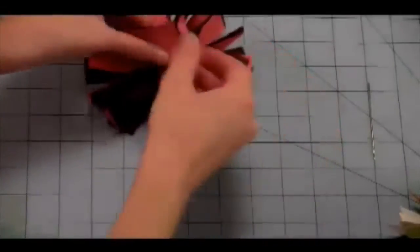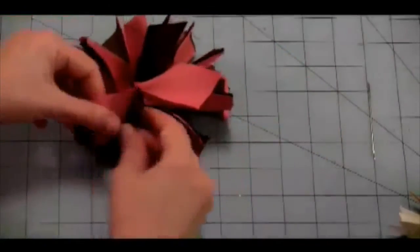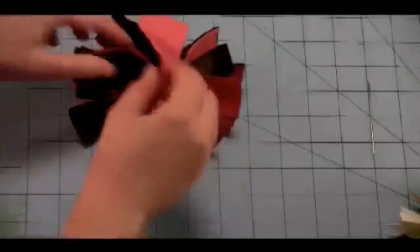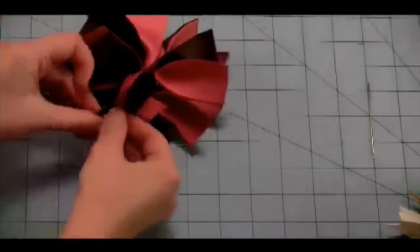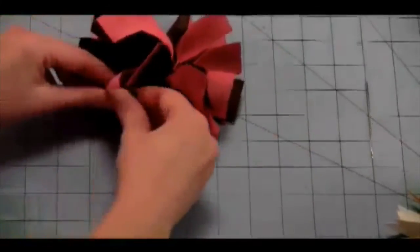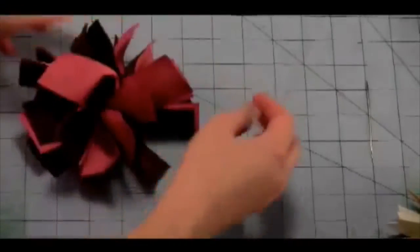Now you can just fluff this up however way you like. Again, if you want to try to separate some of these layers, make it more full and fluffy you can. That's just another way to make your firecracker bow.